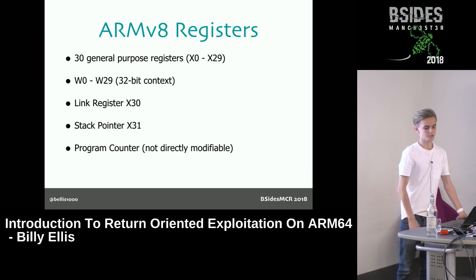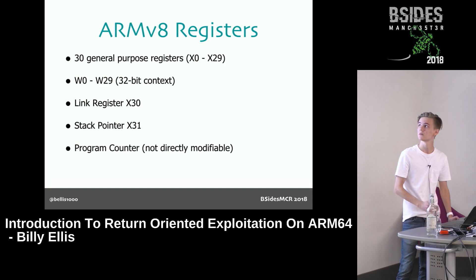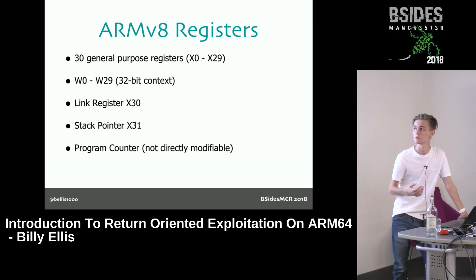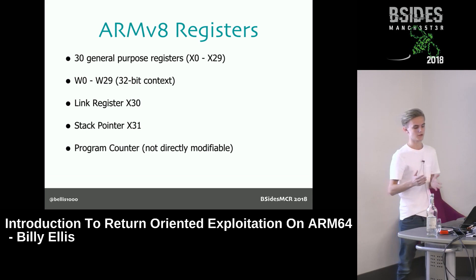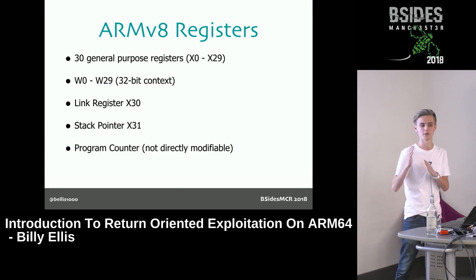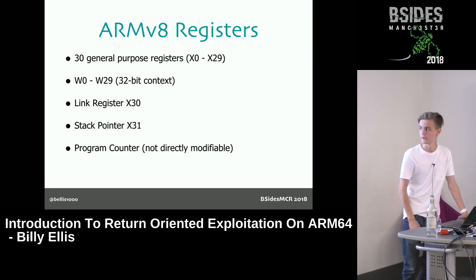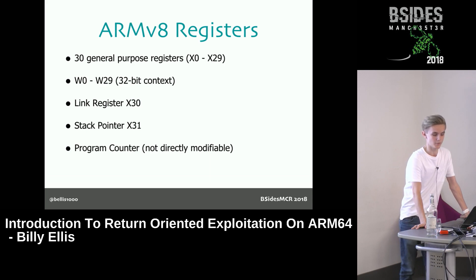With the registers on ARMv8, we have a different set. This time we have 30 general purpose registers labeled from X0 to X29. You can also refer to these in a 32-bit context using a W prefix, which references the same register but treats it as a 32-bit register, essentially ignoring the upper 32 bits. We have the same three special purpose registers: the link register X30, stack pointer X31, and the program counter, which this time is its own register not directly modifiable by the programmer.